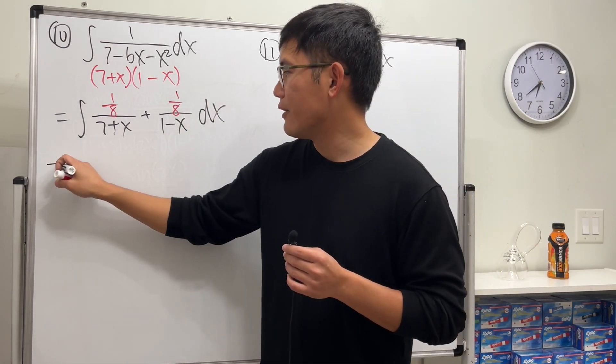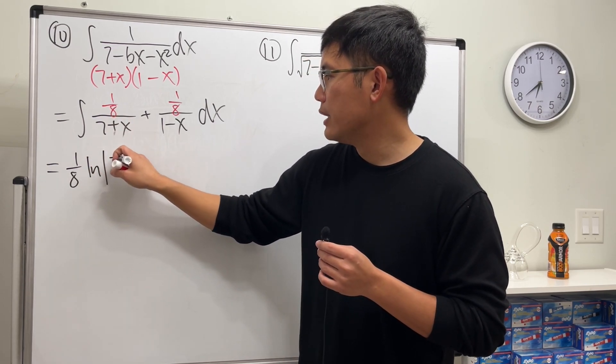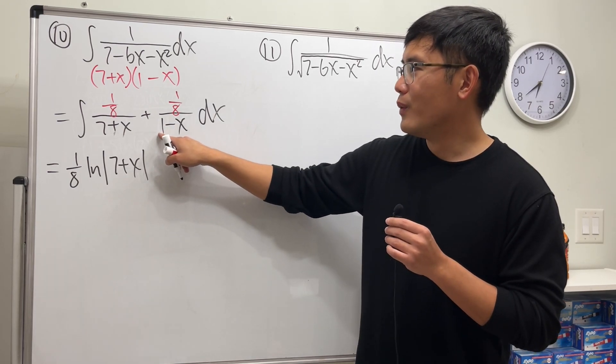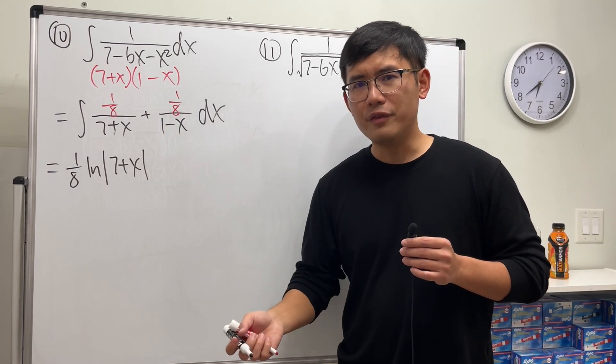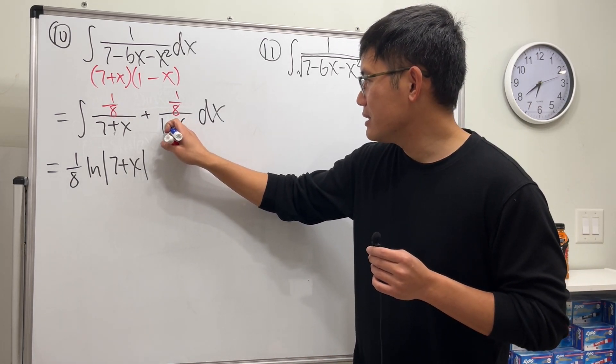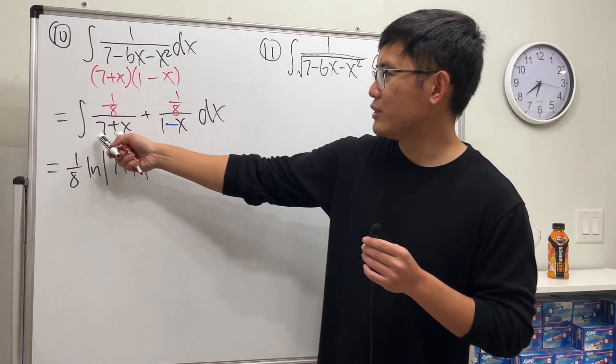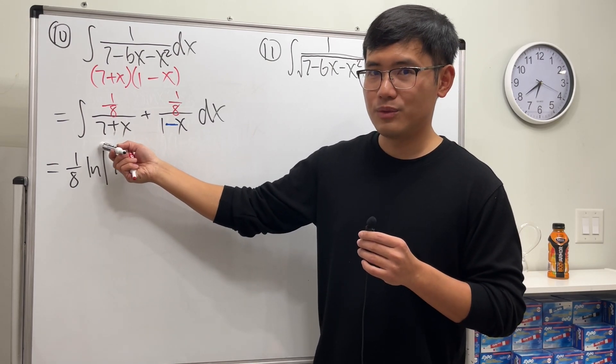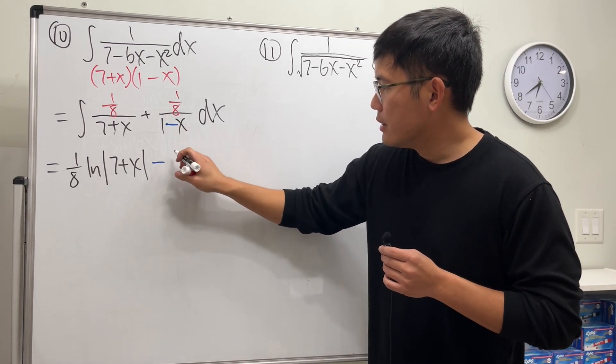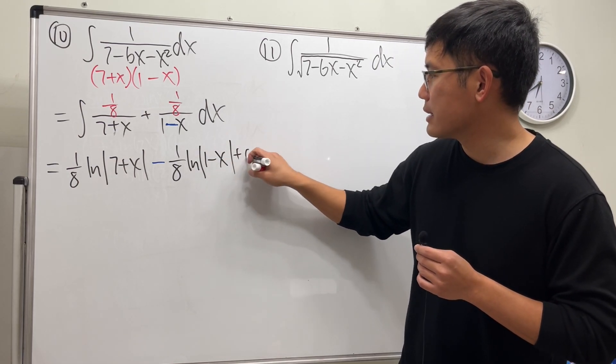All right, so both of them have 1 over 8. The answer is 1 over 8 ln absolute value 7 plus x. The other one, be really careful: 1 minus x. Do a u-sub. The derivative of 1 minus x is negative 1, so because of this minus, we will have to have a minus here. Be really careful. Earlier it was just 1, the derivative of 7 plus x is just 1, so we didn't need to do that. Then we have the 1 over 8 ln absolute value 1 minus x, and with all that we are done, plus c.